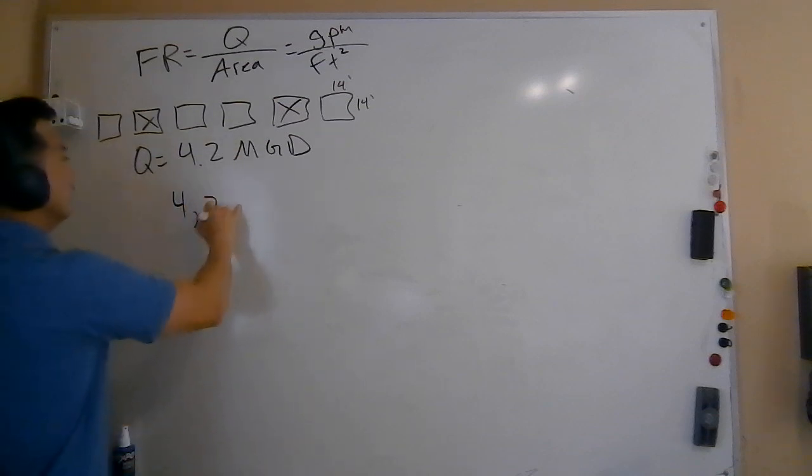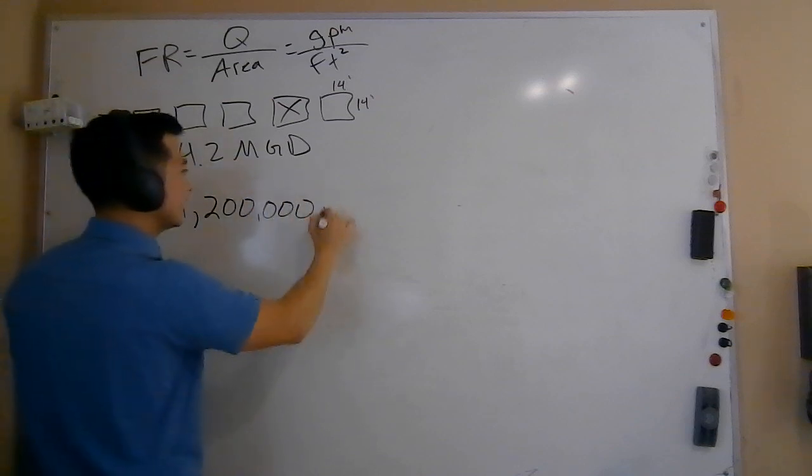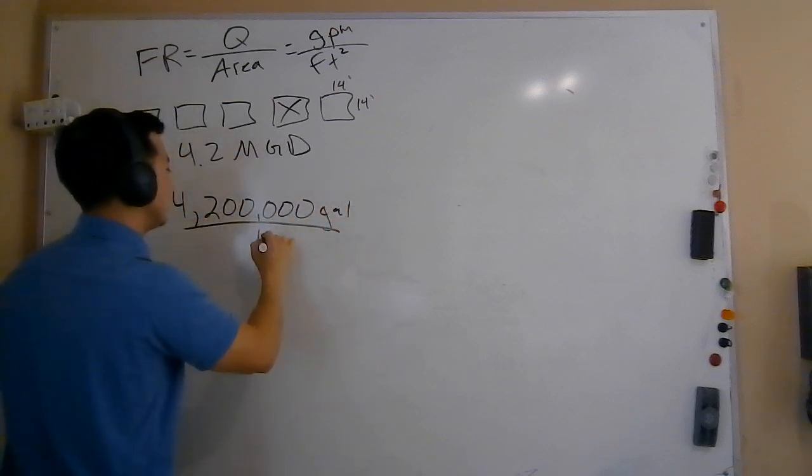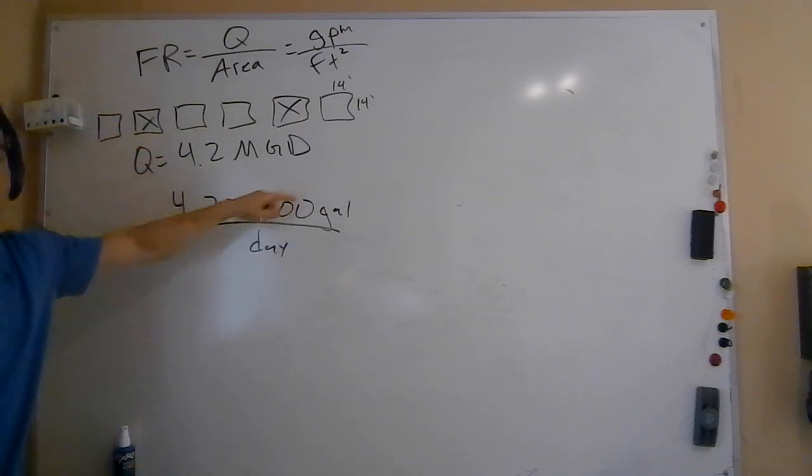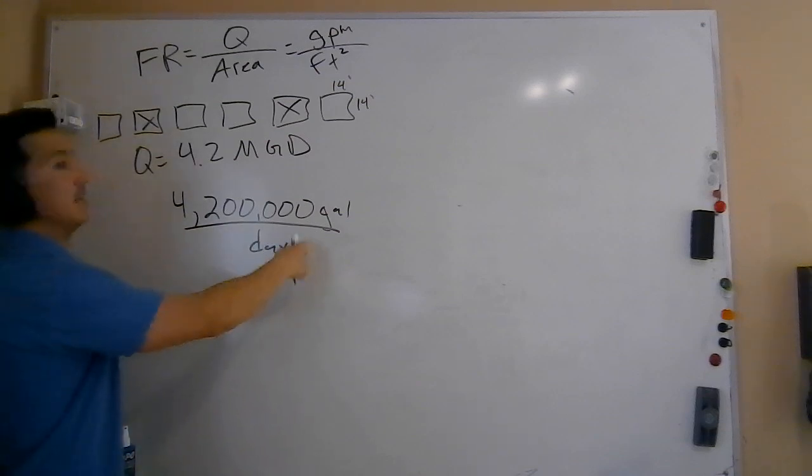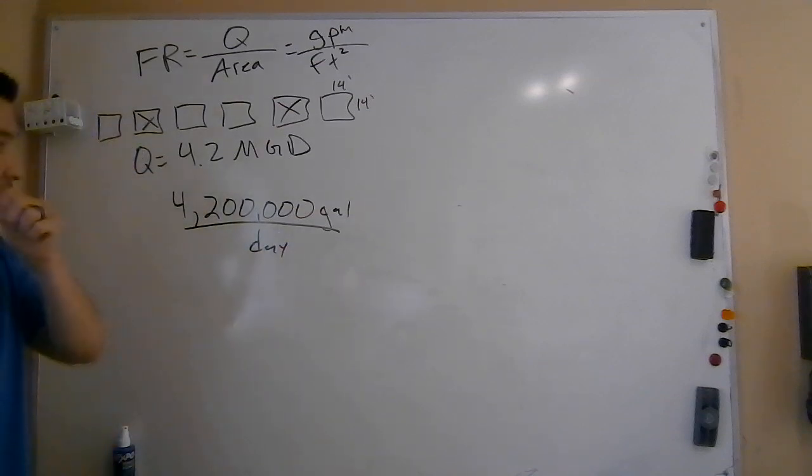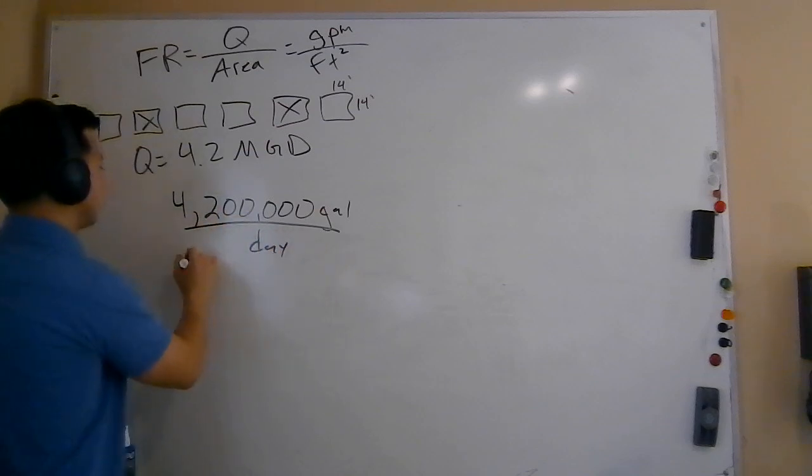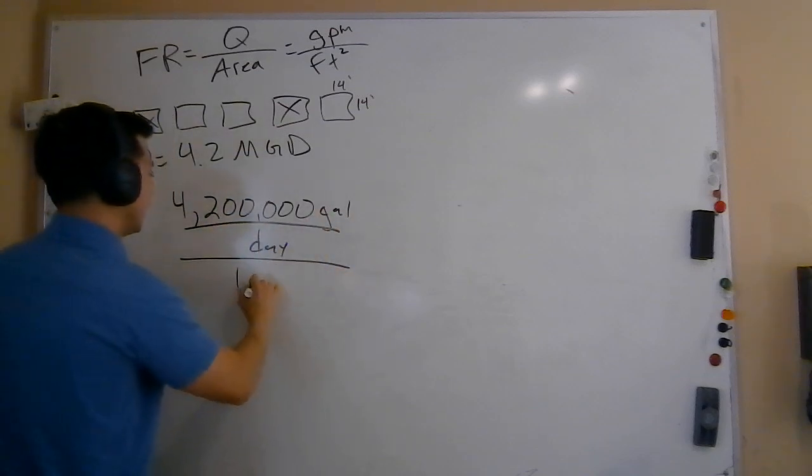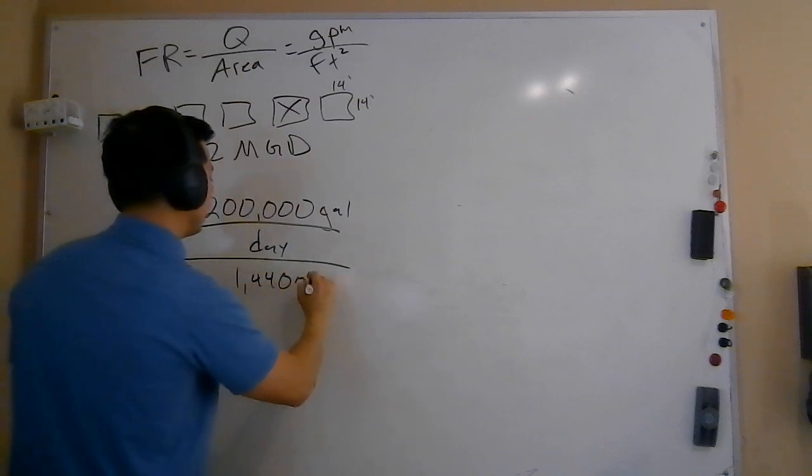So we got to do a quick unit conversion. In this case, we're going to do 4,200,000 gallons per day, right? That's what this essentially is saying, 4.2 MGD. Let's write it out as gallons, 4,200,000 gallons per day. I need it in gallons per minute. So instead of days as my unit down here, I need to figure out what is this in terms of minutes. How do we convert from day to minute? If you look at your formula sheet, or remember there's 1,440 minutes in a day. So what are we going to do? We're going to take this, we're actually going to divide the 4.2 million gallons per day by the 1,440 minutes per day.